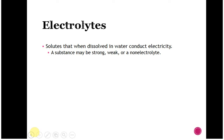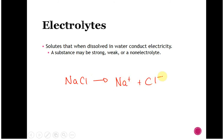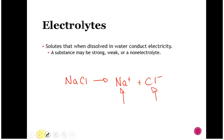Electrolytes are just substances that when you dissolve them in water, they're going to conduct electricity, and it's because they have an overall charge. In Chem 111, we deal primarily with salts, and things like NaCl will break apart in solution to form Na⁺ and Cl⁻. When we have positive charges and negative charges in water, you can start to conduct electricity — which is why you're not supposed to go swimming in water during a lightning storm.